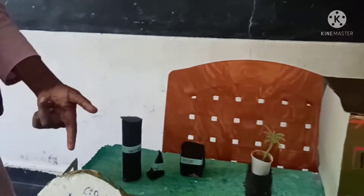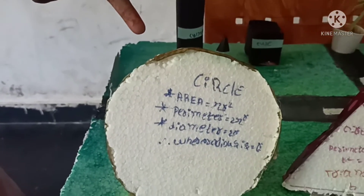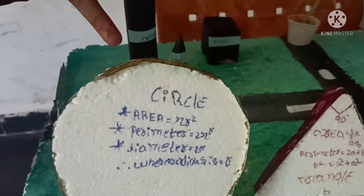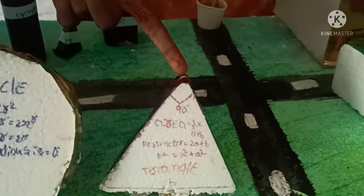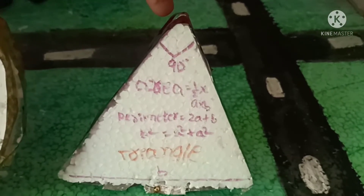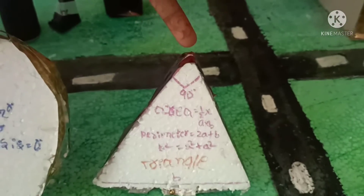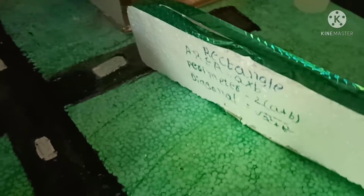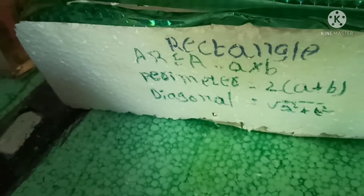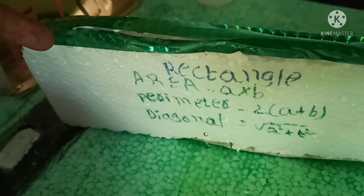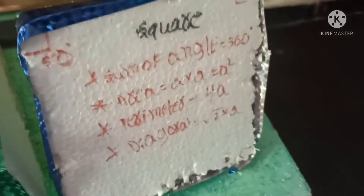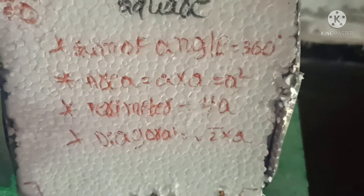Area of circle is equal to pi R square. Area of triangle is equal to half B into H. Area of rectangle is equal to L into B. Area of square is equal to S into S.